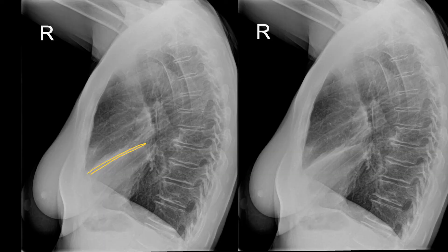The lateral film shows a very thin white line, which is the apposition of the horizontal and oblique fissures with this very tight middle lobe collapse.